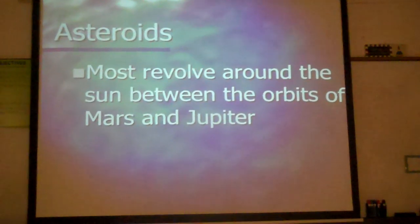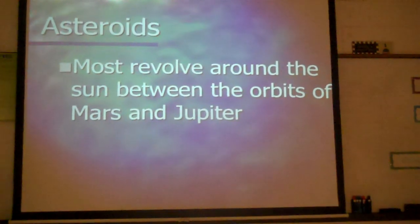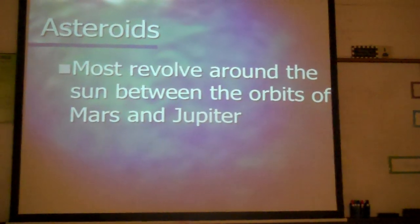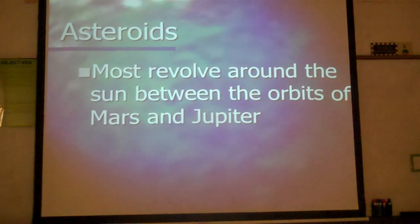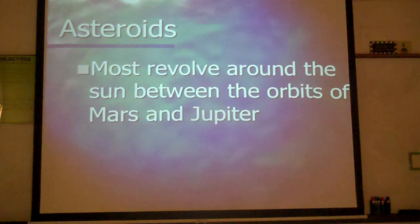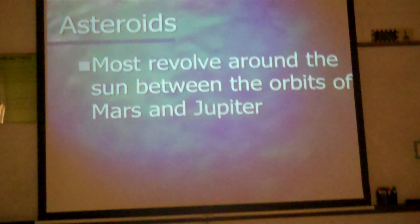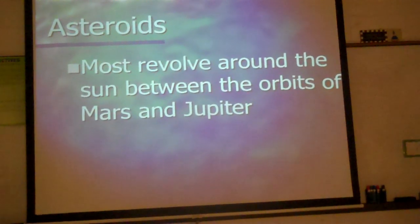Or a planet was there and it exploded, and all the little pieces are now floating between Mars and Jupiter. These are all the big chunks of rocks that did not form into planets and are found between those two planets.